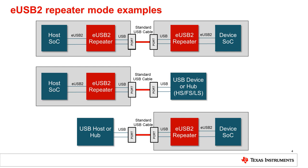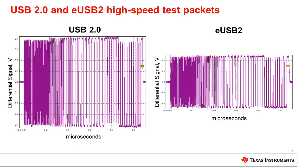As always, when a USB 2.0 device is connected to a USB 3.0 host, or a USB 3.0 device is connected to a USB 2.0 host, the connection will be at USB 2.0 speeds. So, eUSB2 repeaters are external level-shifting repeaters that allow SoCs to use 1.2 volts or lower-voltage I/O cells and be placed 10 inches or more away from the USB connector — yes, they are.